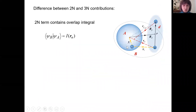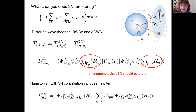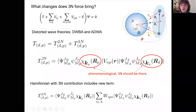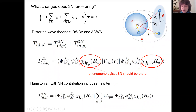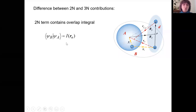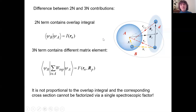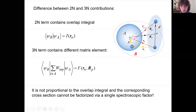What difference does this bring? For the two-nucleon term, because the interaction between neutron and proton does not depend on the coordinate of the system, we can integrate over the internal variables of the target first. We arrive at an overlap integral that is just a function of the separation between the neutron and the target. However, the second term contains a different matrix element — it depends not only on the neutron-target separation but also on the position of the outgoing proton.